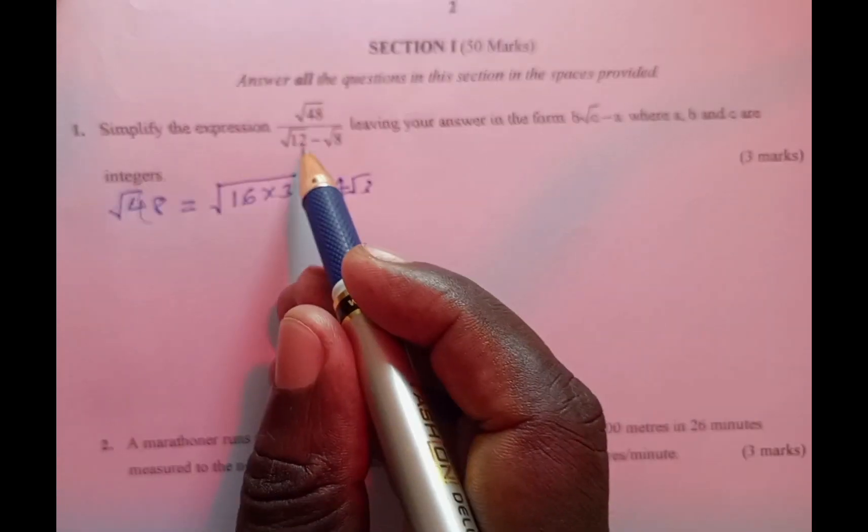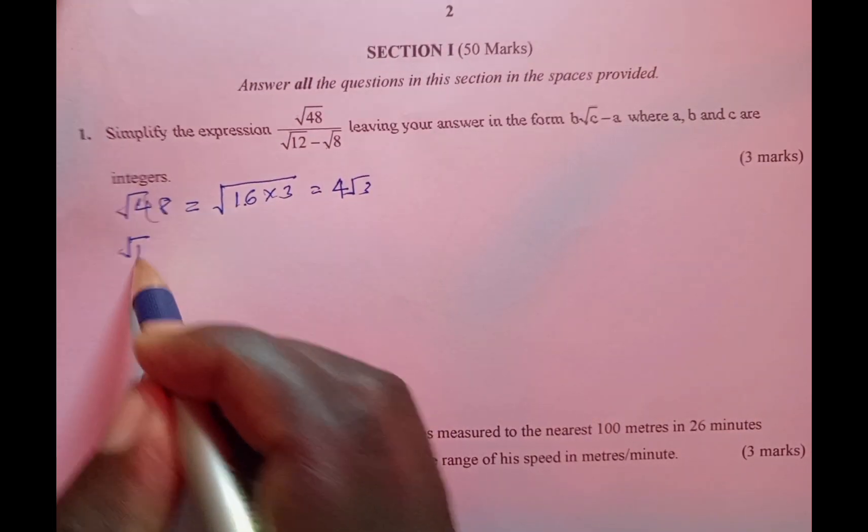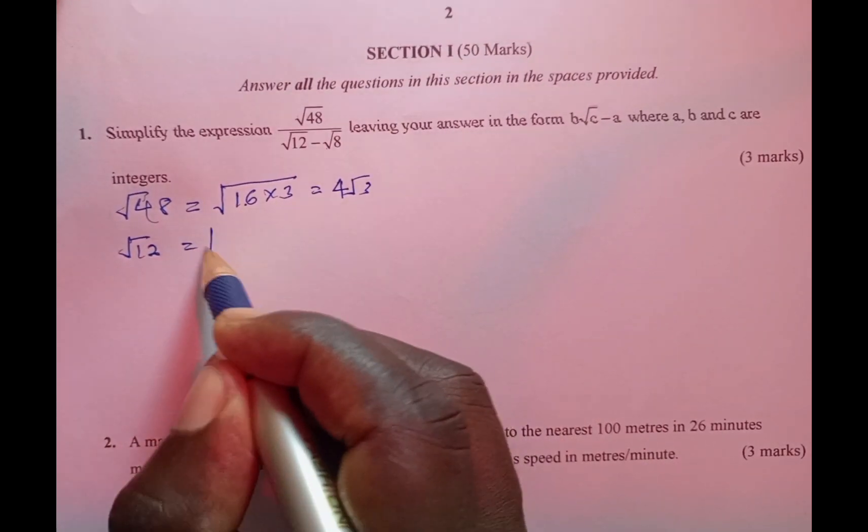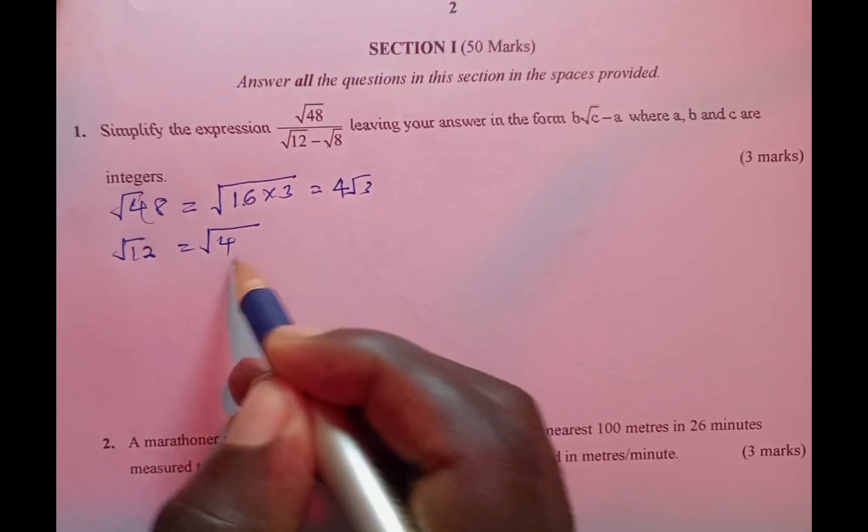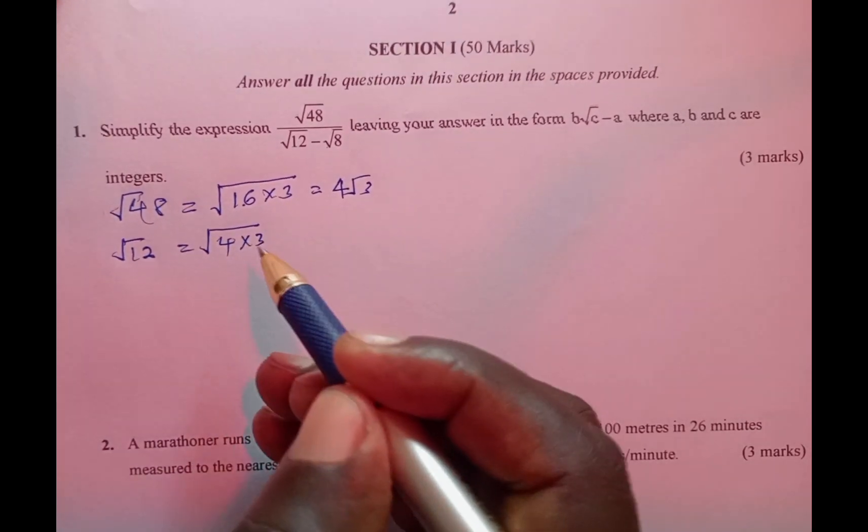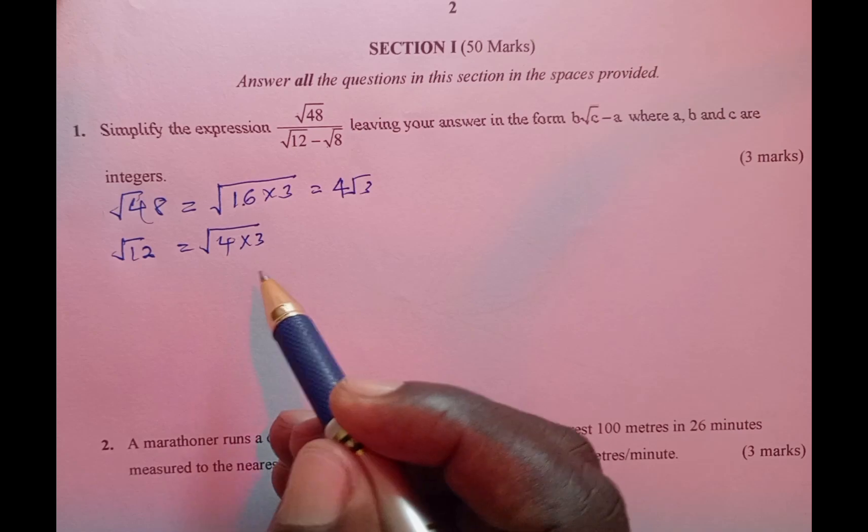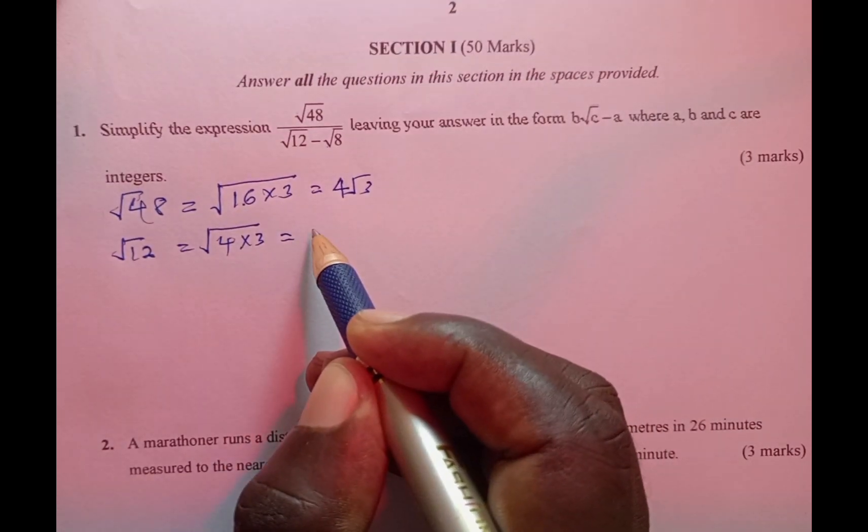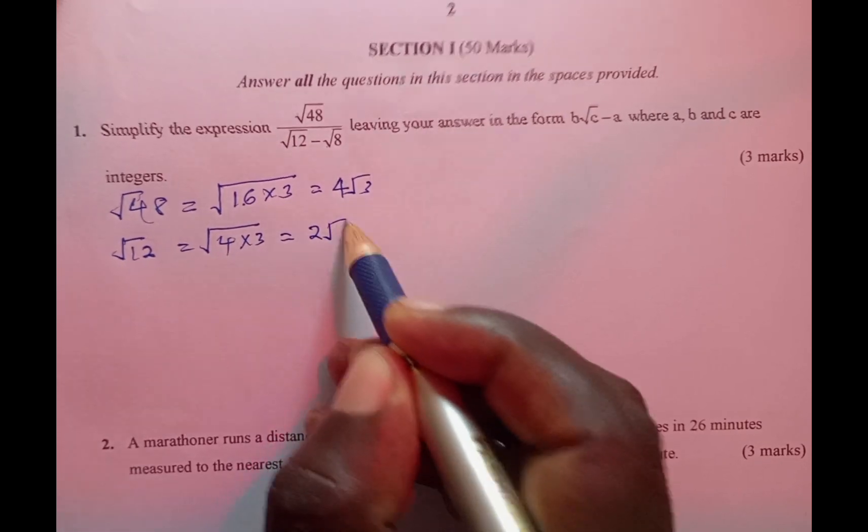Then we come to √12. Again we simplify: √12 is the same as √4 multiplied by 3. Remember one of the numbers must have the direct square root, and this one is going to be equivalent to 2√3.